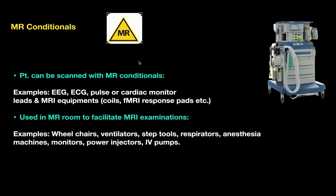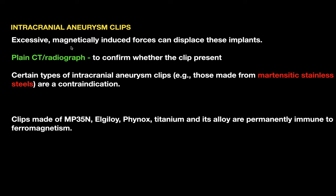MR Conditional equipment used in the MR room to facilitate examinations includes wheelchairs, ventilators, step stools, respirators, anesthesia machines, monitors, power injectors, and IV pumps. Intracranial aneurysmal clips are also MR Conditional. Excessive magnetically induced forces can displace these implants, so plain CT or radiograph should be performed to confirm whether a clip is present. Certain types of aneurysmal clips made from martensitic stainless steel are contraindicated; clips made of MP35N alloy, Elgiloy, Phynox, titanium and its alloys are permanently immune to ferromagnetism.